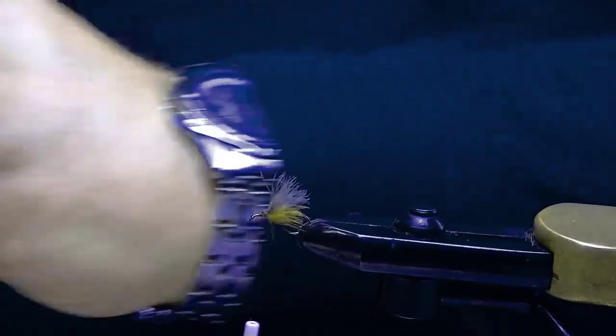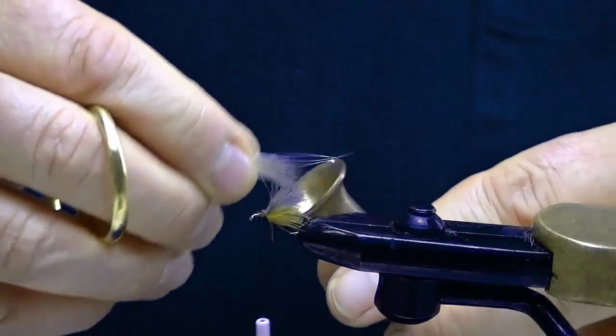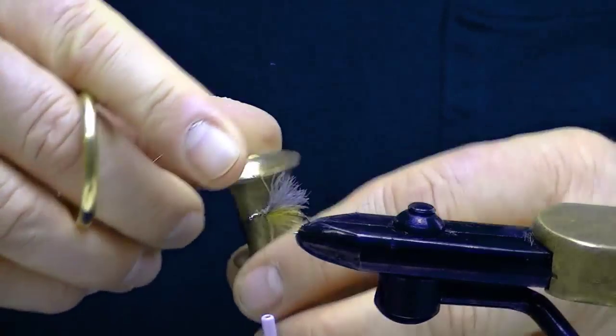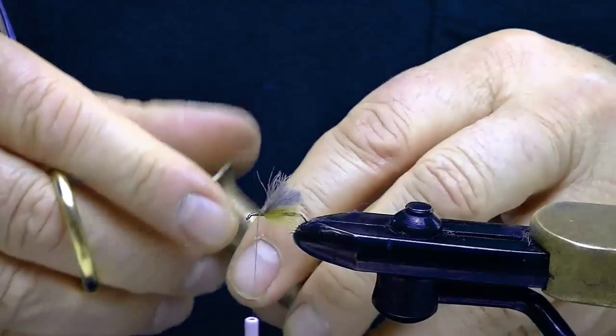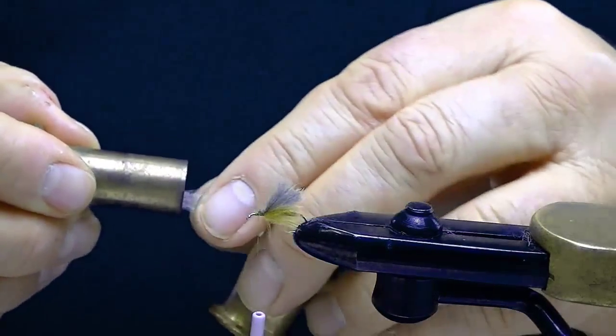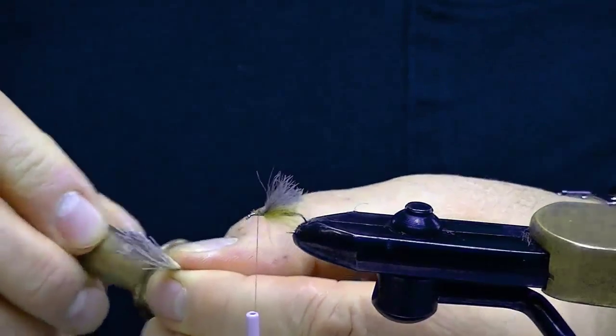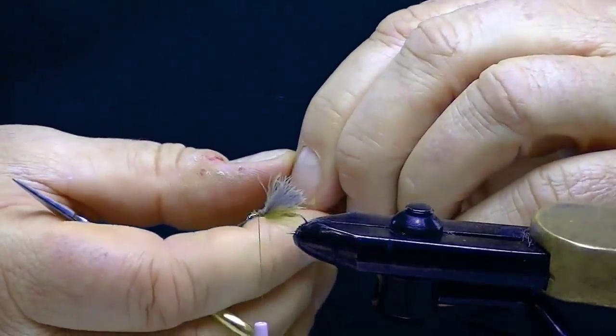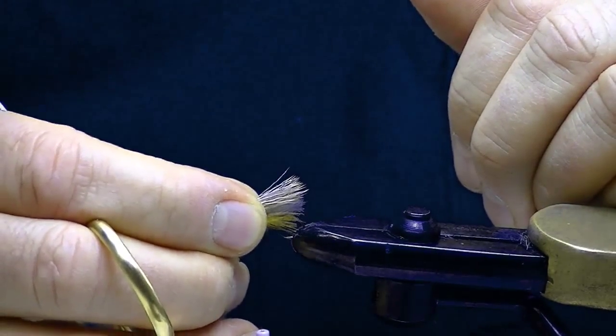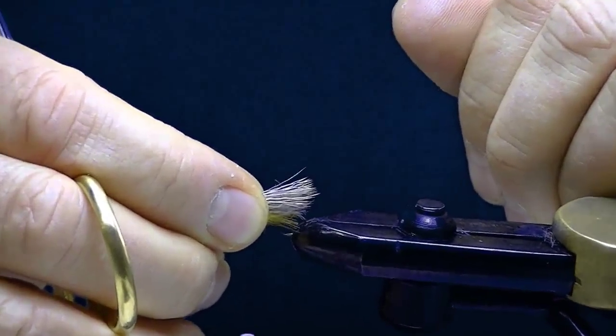I'm going to go ahead now and drop it in a stacker. Let's see how it worked. It worked. I love these things. So I've got a beautiful little stacked elk wing. I want this to go to right about the end of the hook.